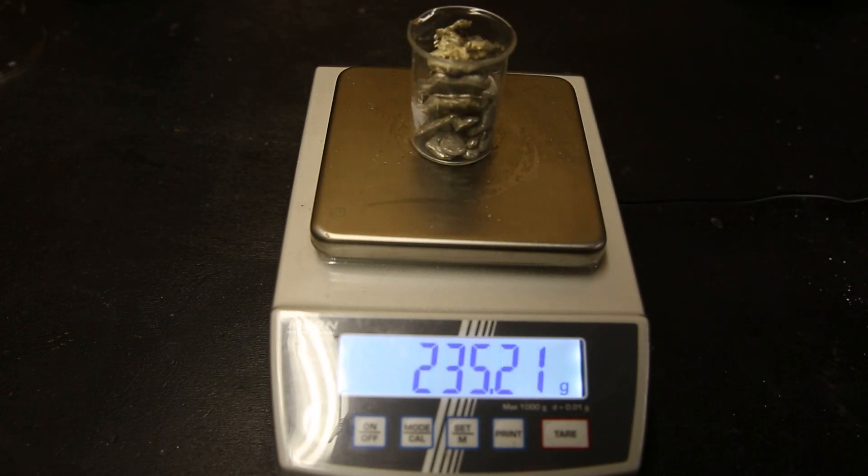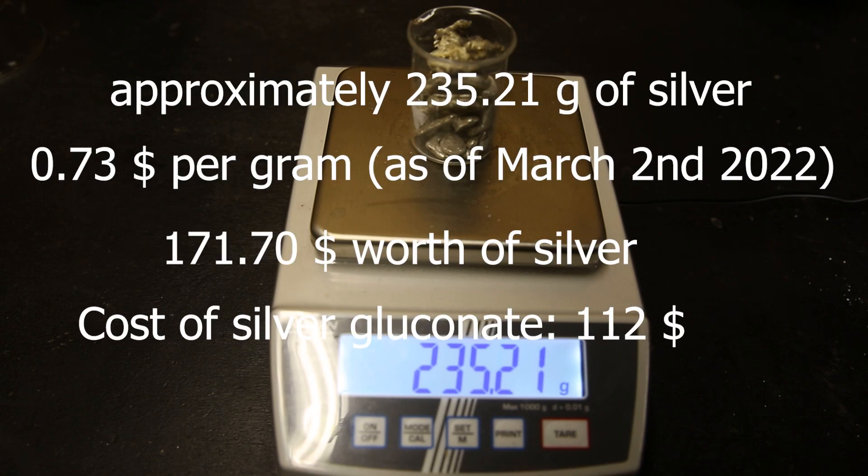So I have 235.21 grams of silver. So as of today, silver is 0.73 dollars per gram. Which means, assuming the silver is pure, it is worth 171.70 dollars. Which is more than what I paid for all of the bottles of silver gluconate, which cost me 112 dollars.